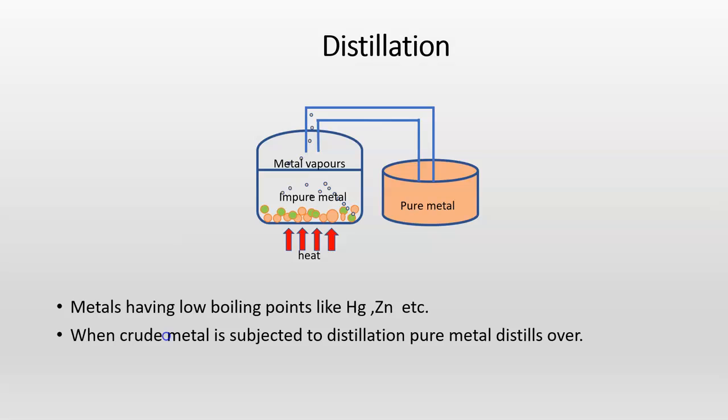When crude metal is subjected to distillation, pure metal distills over. The impurities with high boiling point or non-volatile are left behind in the retort and thus we have pure metal.